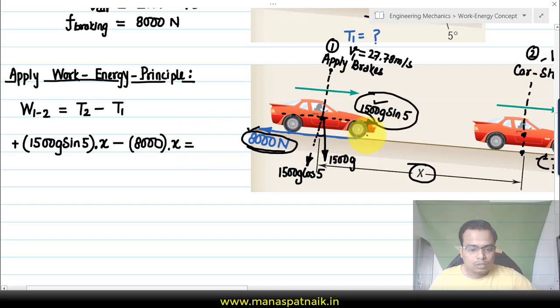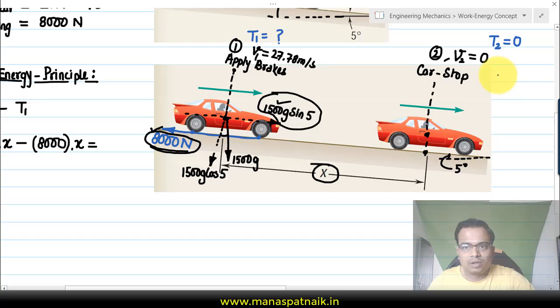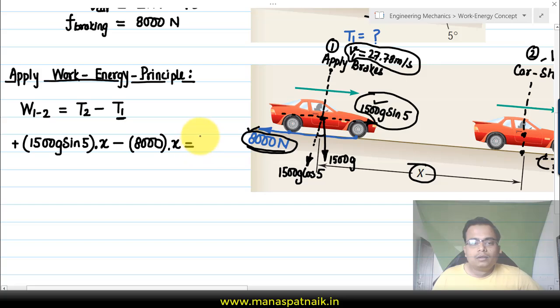This is going to be equal to T2—T2, the final kinetic energy. Finally the velocity is zero, so half mv squared is also zero. So T2 is zero, minus the initial kinetic energy, that's half of m (the mass of the car, 1500 kg) multiplied by the velocity of the car squared at position one.